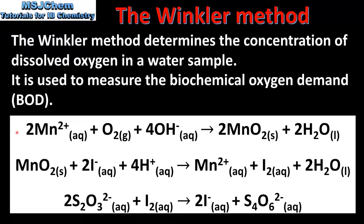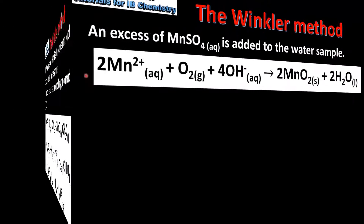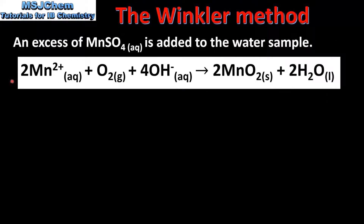The Winkler method has 3 main steps which we can see here. In the first step, the dissolved oxygen in the water is fixed by adding an excess of manganese sulfate in an alkaline solution.